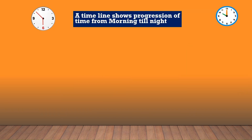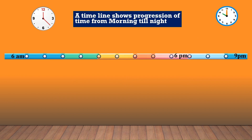You have just seen how a timeline shows the progression of time from morning till night. A timeline is a visual representation of events arranged in chronological order. It works like a number line with a start and an end. The starting point represents early morning 6 AM and the ending point represents night bedtime 9 PM. The divisions represent equal intervals of time — hours. After 6 AM it goes 7, 8, 9, and on like that.